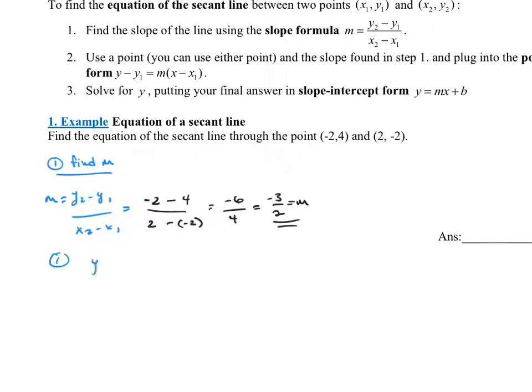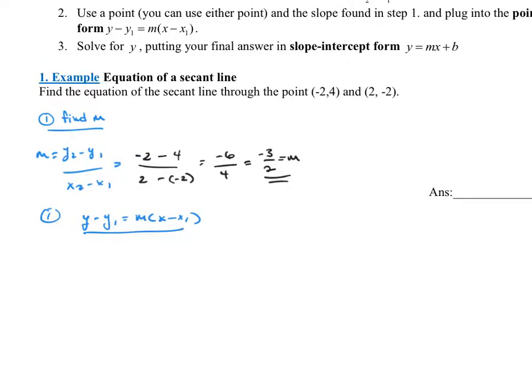Step 2 is to use the formula y minus y1 equals m times x minus x1, the point-slope formula. Well, we can use either of the points that we've been given. We've been given two points, (-2, 4) and (2, -2). It doesn't matter which one of those points you use. I'm probably going to use the first one just because it's the first one. It doesn't really matter. So I'll do y minus my first y value, which is 4, equals m. That slope we just found was negative 3 halves times x minus that x value of that first point, which was negative 2.